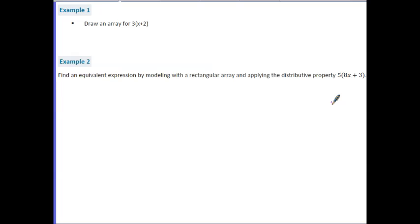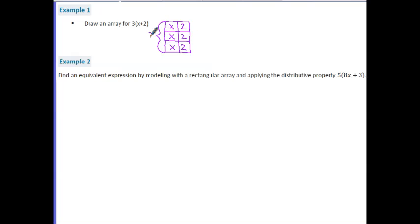For example one, we draw an array for three times (x plus two) using the box method. We create a box showing x plus two as the width, then repeat it three times to show a length of three. Combining like terms: x plus x plus x gives us 3x, and two plus two plus two gives us six. Notice that 3x and 6 cannot be combined because they are not like terms.